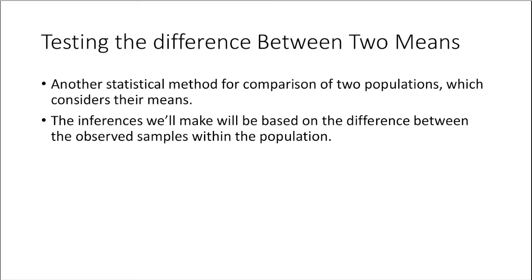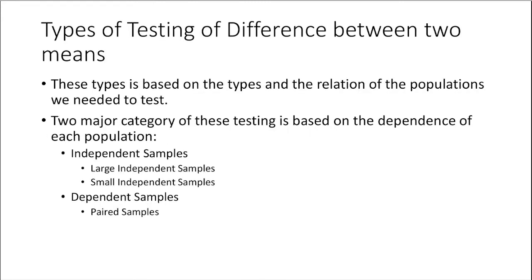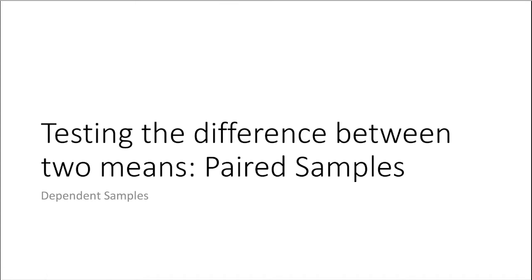As a review, this is just a method for comparison of two populations considering their means. This is another statistic that will anchor our inferences on the difference of the means of paired samples. We finished last time with independent samples — both large and small — and today we move to dependent samples, utilizing the test for the difference between two means of paired samples.